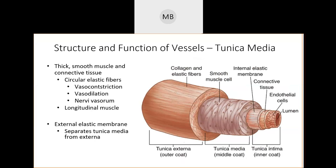Objective two is to define and describe vasoconstriction and vasodilation. Dilation means getting bigger — like when your eye doctor dilates your pupils. Vasodilation means your vessels got really wide, your arteries and veins got wider. Vasoconstriction is the opposite — like a boa constrictor, everything contracts and gets more narrow. All of this is controlled by the tunica media and its smooth muscles.